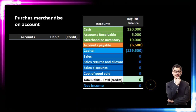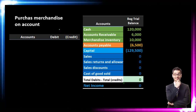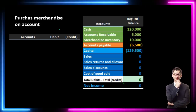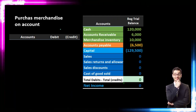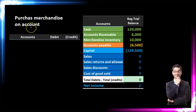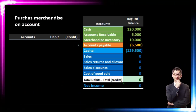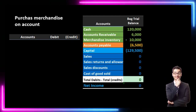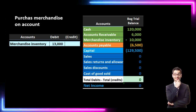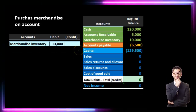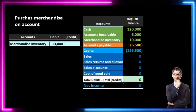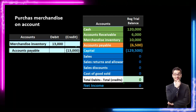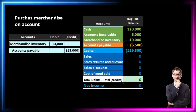Starting with purchasing merchandise on account — this transaction will not differ under either method. Whether we have a perpetual or periodic system, we're going to purchase the merchandise the same way. Cash is not affected because we purchased on account, meaning we used accounts payable. First think about what we got: merchandise inventory, which is an asset with a debit balance. To make it go up, we do the same thing to it — another debit. So we debit merchandise inventory, then credit accounts payable.